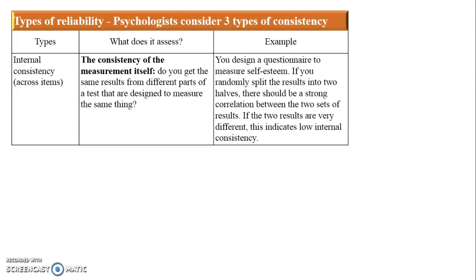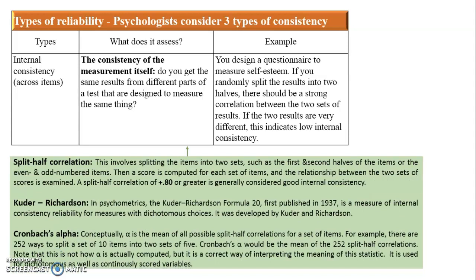The third type of reliability is internal consistency, measured across items. It asks whether you get the same result from different parts of a test that are designed to measure the same thing. For example, if you design a questionnaire to measure self-esteem, randomly split the results into two halves, and check the correlation between the two sets — if results are very different it means low consistency, and if correlation is high it means high internal consistency.